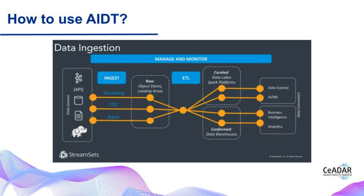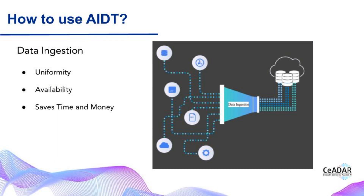Data ingestion is the process of extracting data from various sources and loading it into a destination area. It involves applying light transformations such as filtering or enriching data before writing it to a message queue or data store, while more complex transformations can be performed with supplementary pipelines. Data ingestion ensures uniform formatting by turning different types of data into a uniform format that is easy to read and manipulate. It can make data available to everyone in the company, from developers and BI analysts to sales teams and executives, saving valuable time and money.